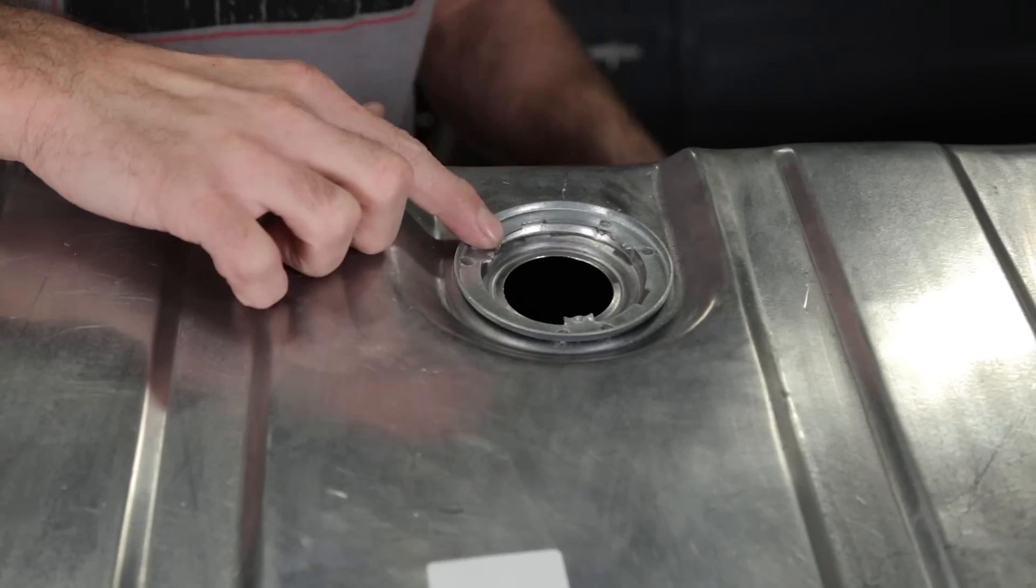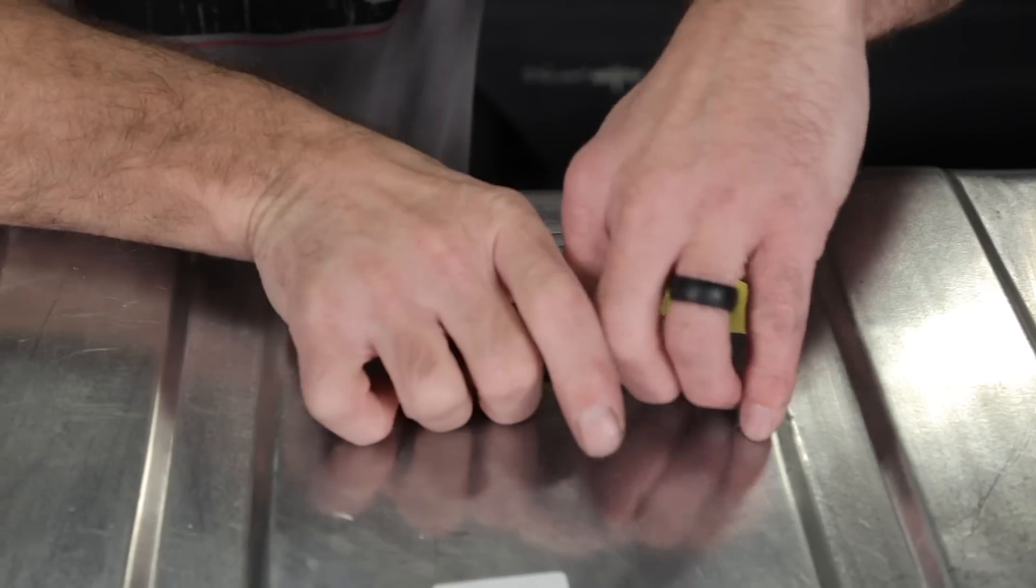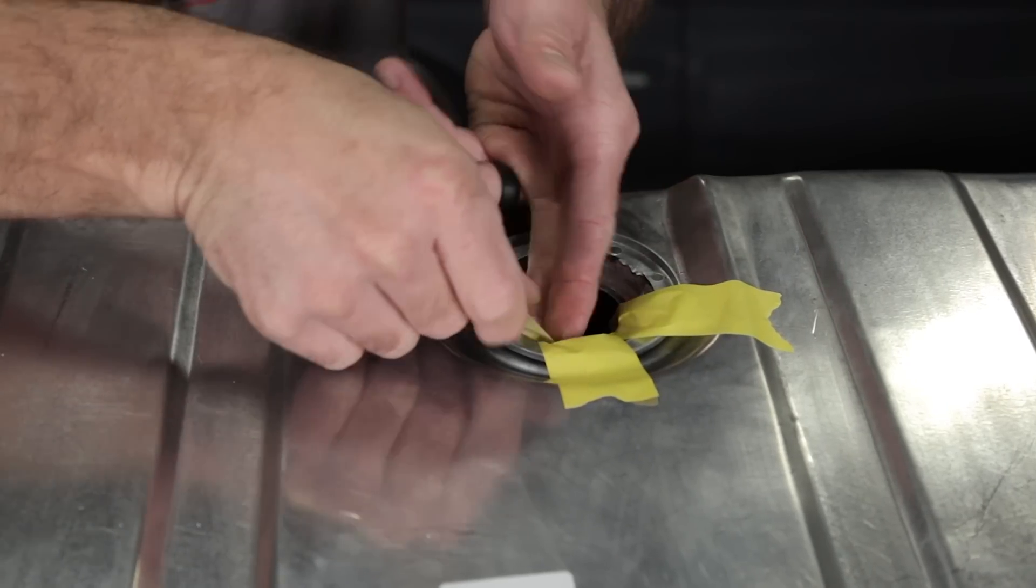Be careful not to tear the hydromat as you insert it into the tank. Applying some masking tape to the raw edges of the tank opening can help prevent damage to the hydromat itself.